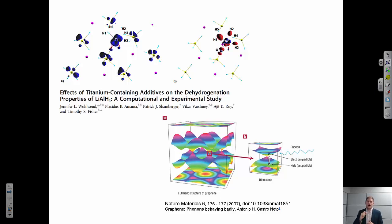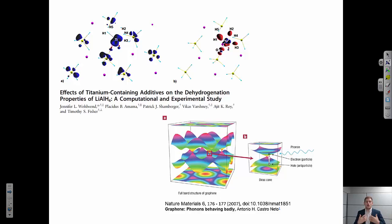Quantum mechanics is a description of the electronic structure of atoms and of matter. So that means if we want to talk about electron densities, if we want to talk about bonding, if we want to talk about any physical properties related to electronic structure — definitely electrical properties, optical properties, thermal properties — all of these are affected by the structure of electrons in a system. So we need to know something about quantum mechanics.